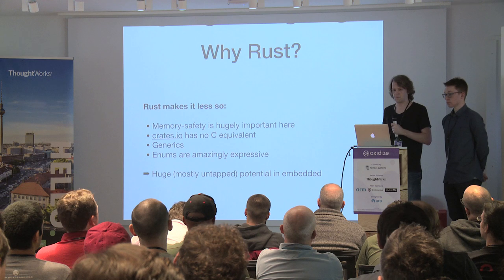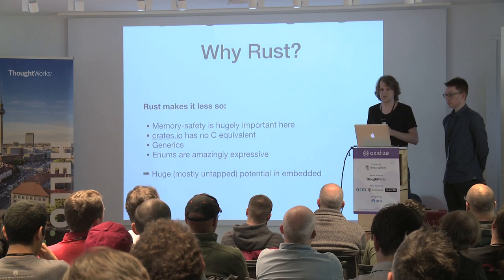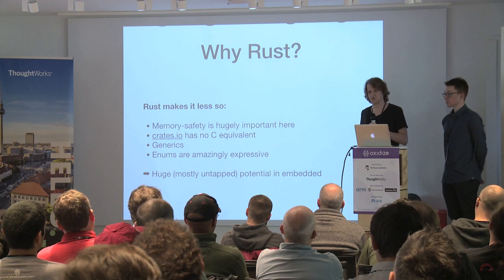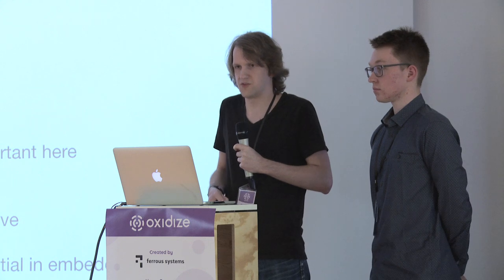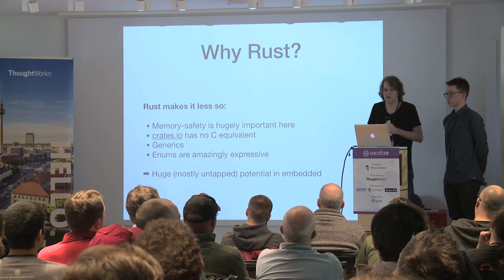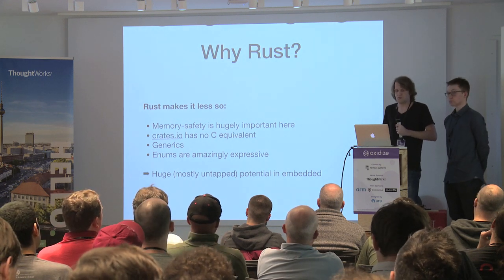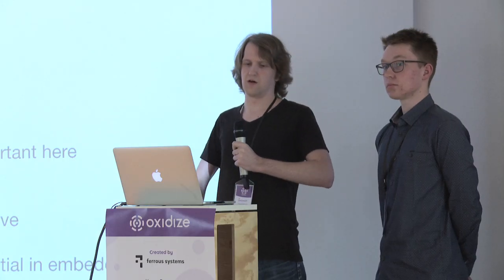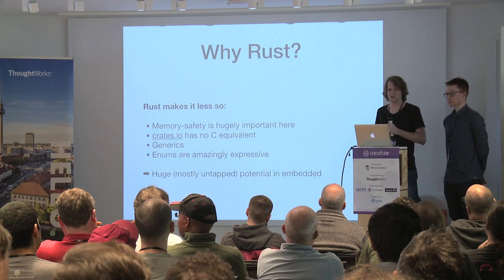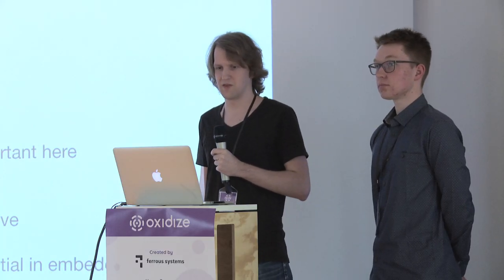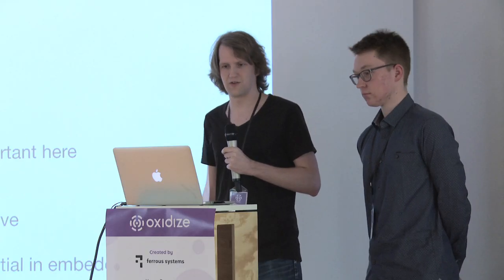We also have enums. In Rust you can associate data with each variant the enum can assume, which is incredibly useful when implementing any sort of network protocol — you can directly put the data in there and see the possible things you can put in a packet. There's lots of potential in embedded that is still mostly untapped because vendor support isn't really there yet. But Rust has made huge improvements over the last couple of years in embedded support, and I think we'll get to a state where embedded is actually really fun.